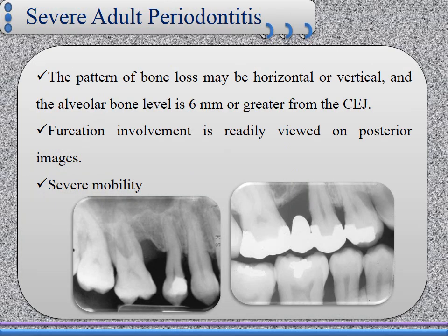Severe adult periodontitis. The pattern of bone loss may be either horizontal or vertical, and distribution may be either generalized or localized. The alveolar bone level is about 6 mm or more from the cementoenamel junction to the alveolar crest. The bifurcation area is also involved and is readily viewed on posterior images due to extension of periodontitis between the roots of multi-rooted teeth. The patient may suffer from severe mobility because of destruction and loss of bone.